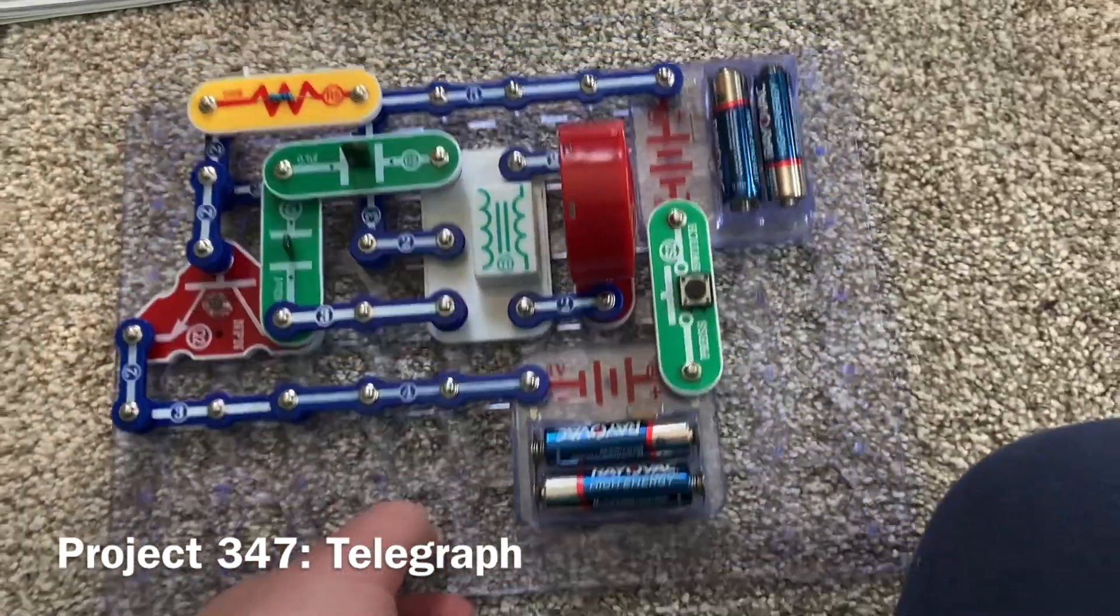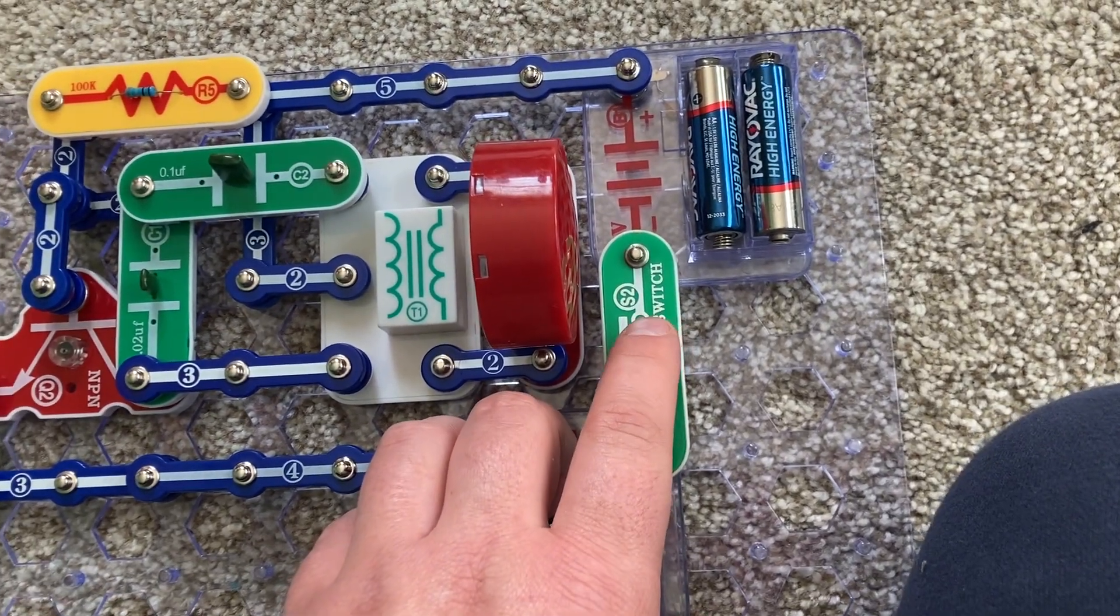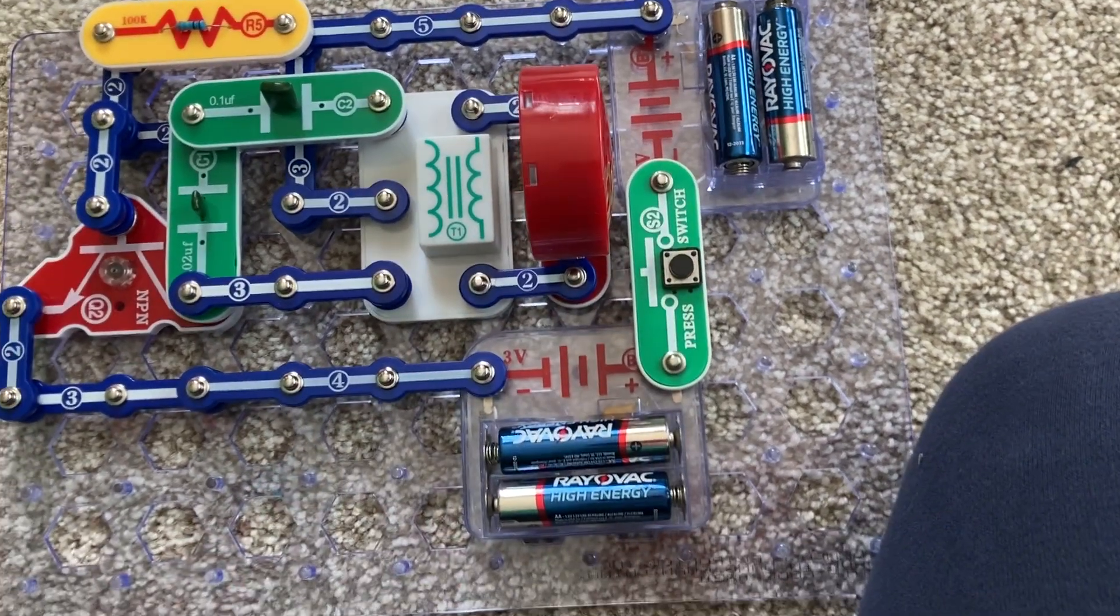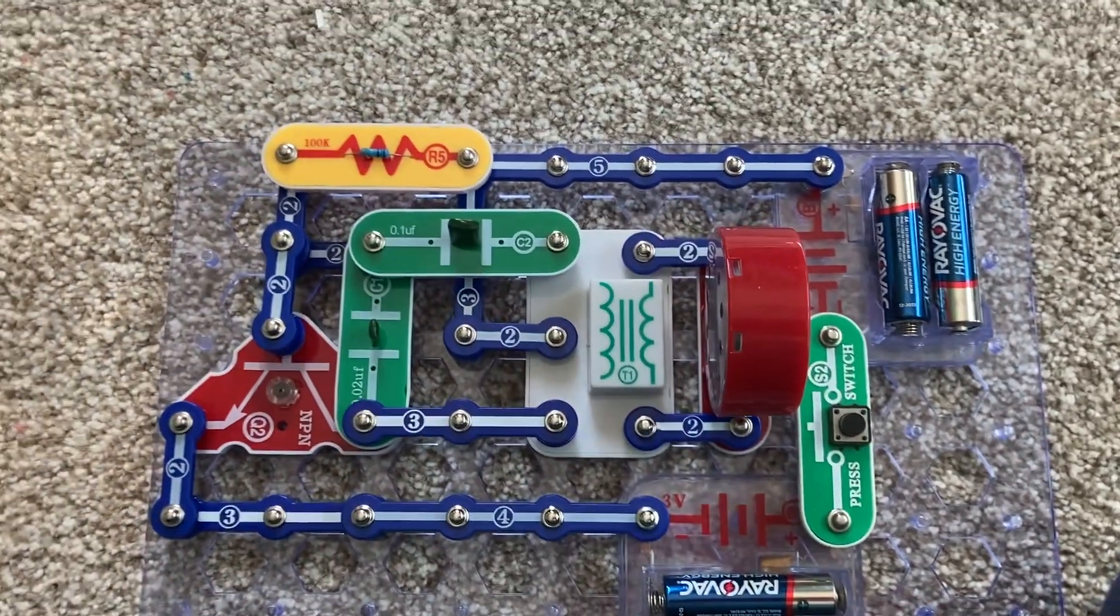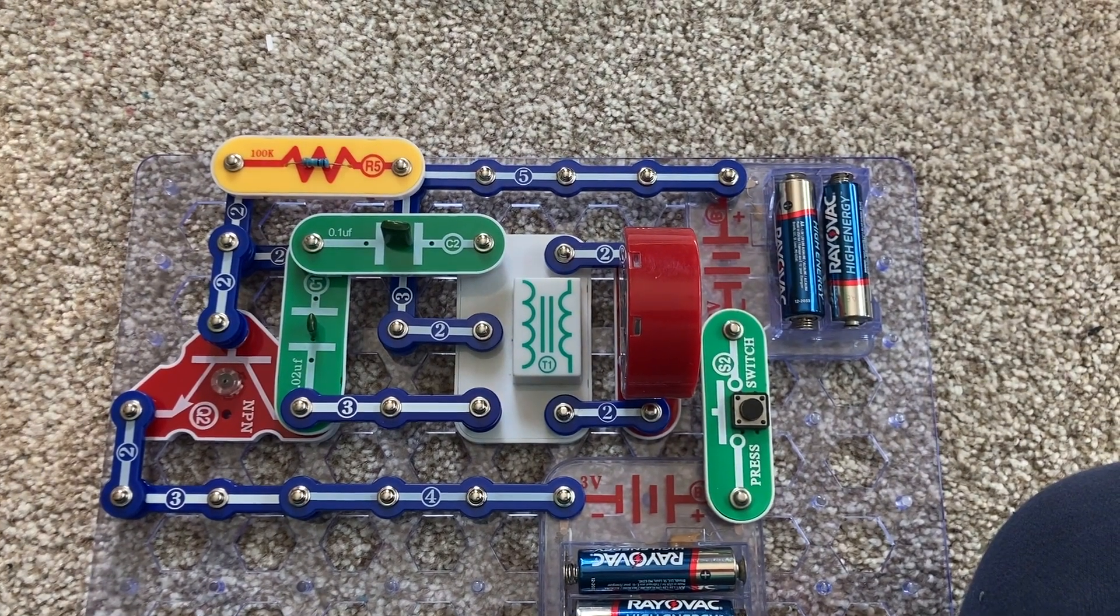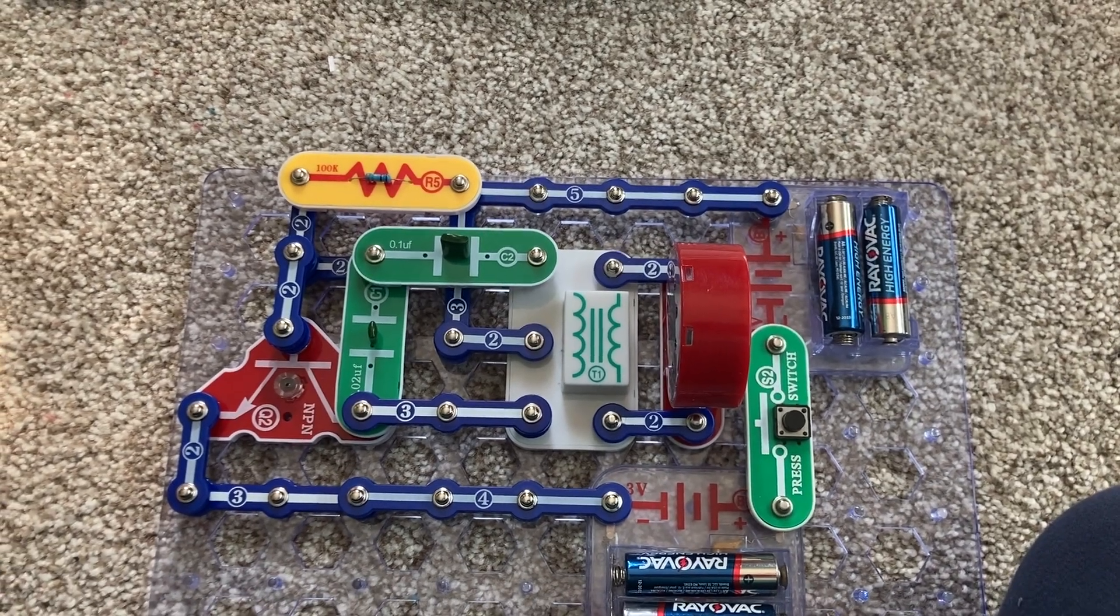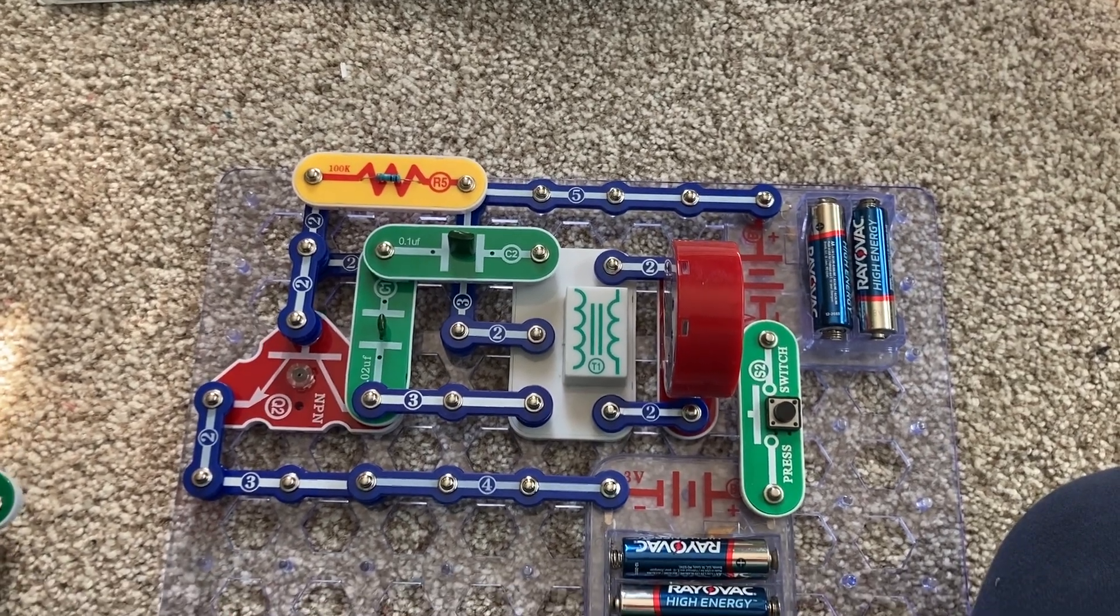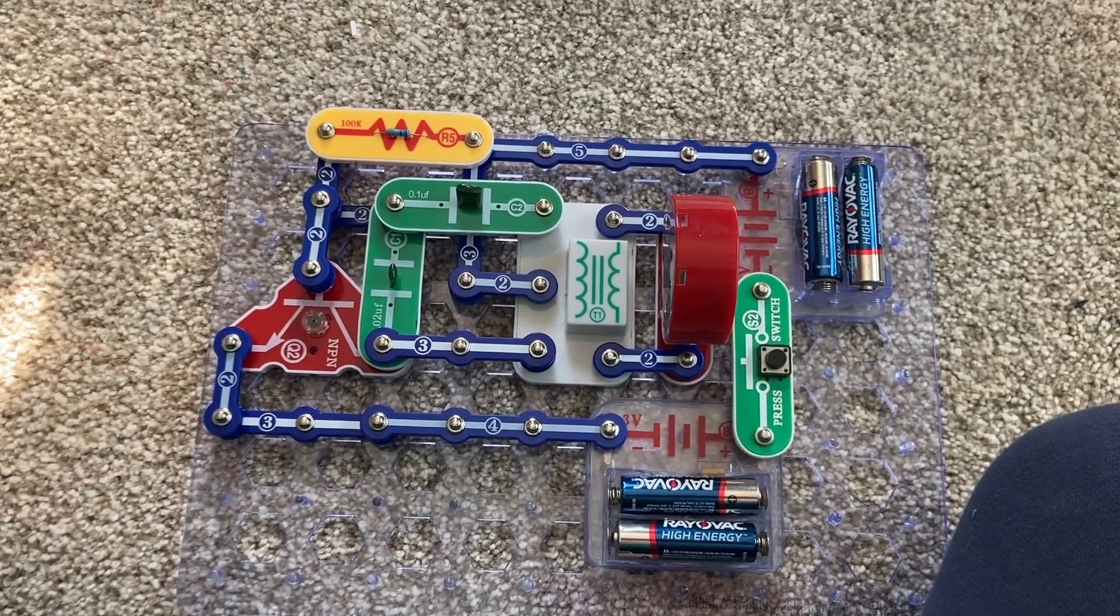This is a telegraph. When you push and hold down the press switch, you hear a low-pitched buzzing sound coming from the speaker. And you can hold the button down for short and long periods to send messages. Different combinations of short and long tones represent the different letters and numbers. Watch Project 228, Morse code generator, for more information about what the different combinations represent and more information about the telegraph.